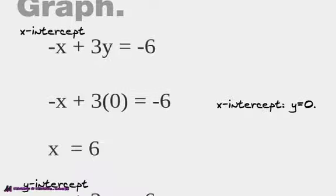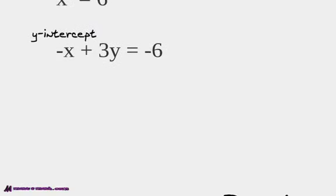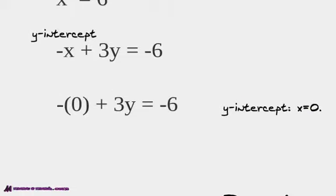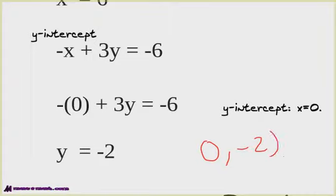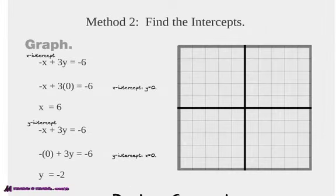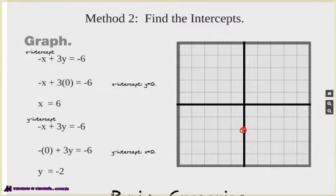Now we find the y-intercept. What does x equal when the line hits the y-intercept? X equals 0. So we plug 0 in for x and solve, and we get y equals negative 2. So our second point is (0, negative 2). Our first point was (6, 0), second point is (0, negative 2). Now we can graph those two points — and there is our line.